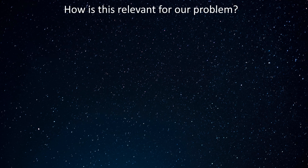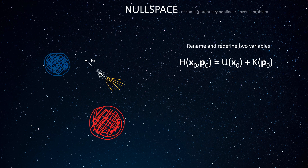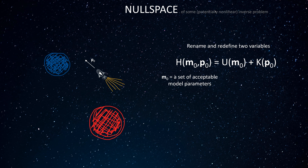Now how is this relevant for our problem? We simply rename and redefine two variables. First we rename x0 into m0, which is now a set of acceptable model parameters. Then we equate the potential energy u with our misfit, which measures how well m0 actually explains our observations.